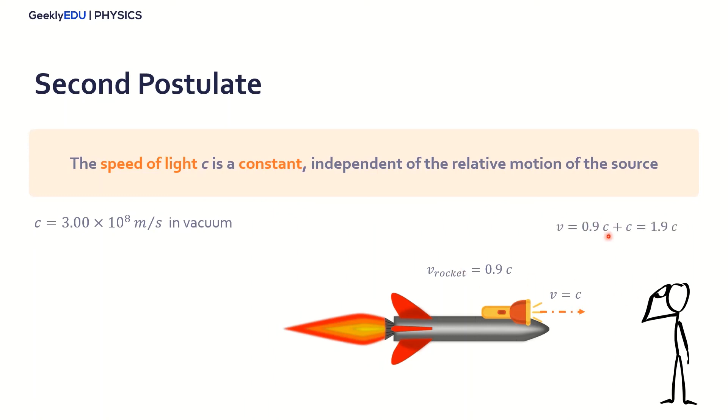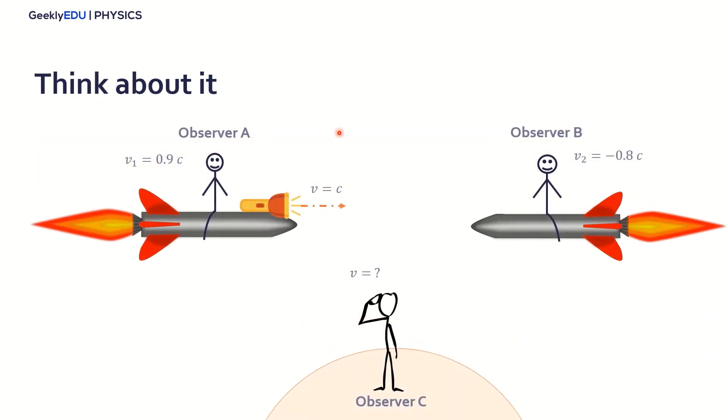So you might think that for this observer, watching something like this, we can just add the velocities. So it's the speed of the rocket plus the speed of light, would be 1.9 times the speed of light. But that's actually wrong. Because the speed of the light is the limit we have. And it's a constant independent of the relative motion of the source. So for this case, this observer would see the speed of the light as the speed of the light. That's the limit.